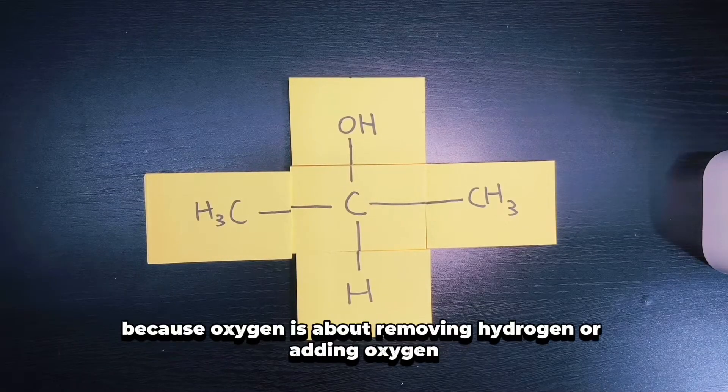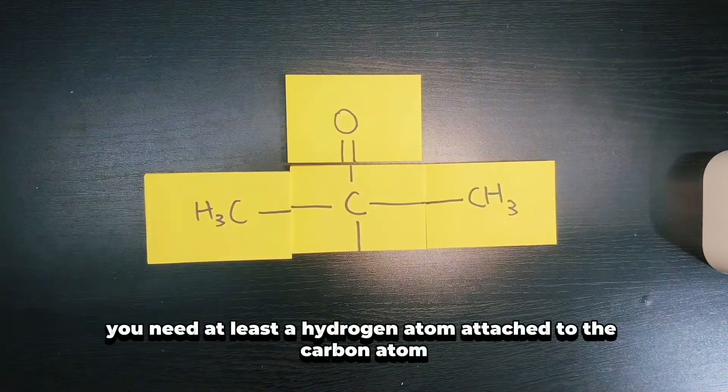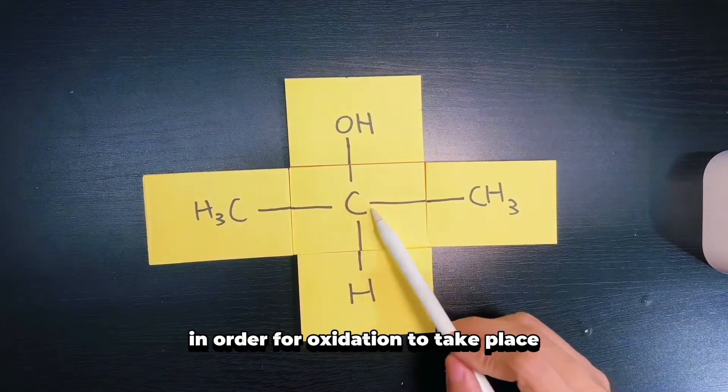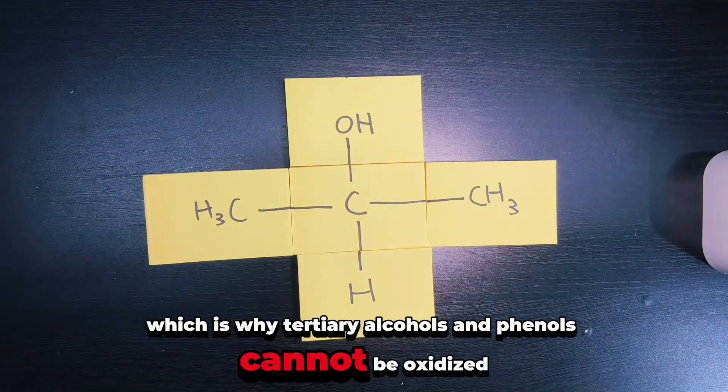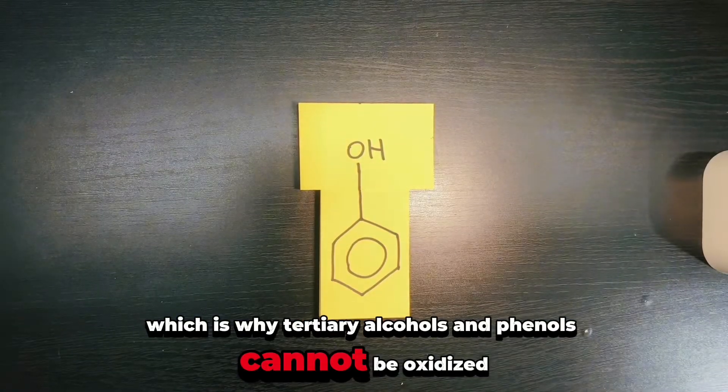The bottom line is because oxidation is about removing hydrogen or adding oxygen, you need at least a hydrogen atom attached to the carbon atom for oxidation to take place, which is why tertiary alcohols and phenols cannot be oxidized.